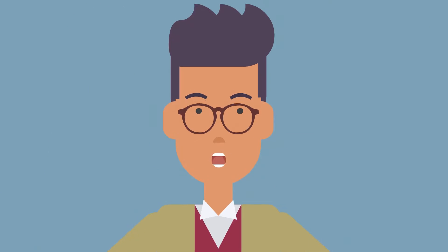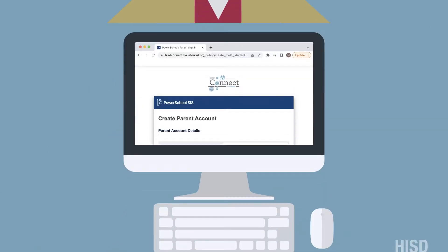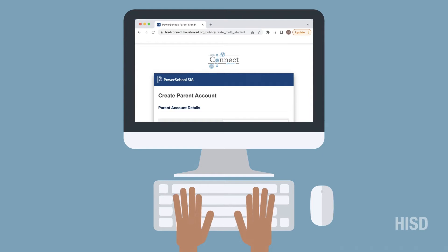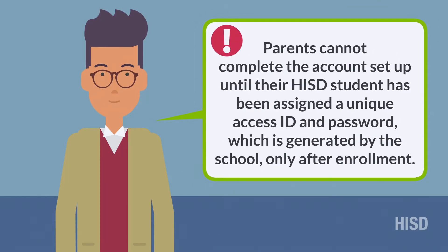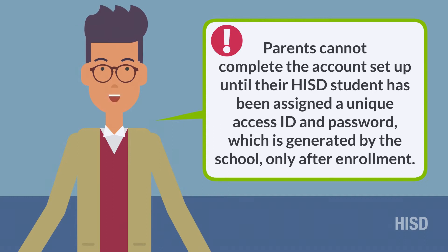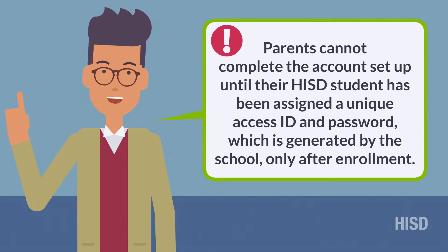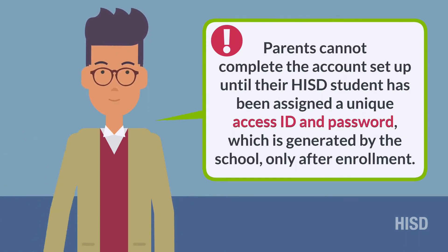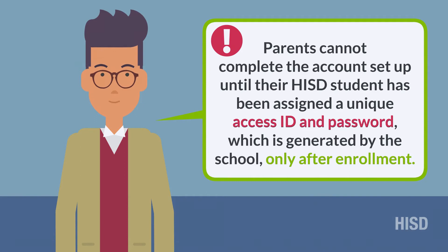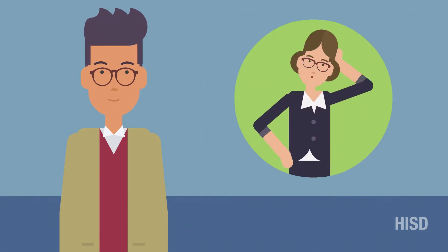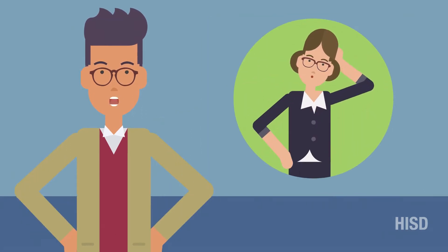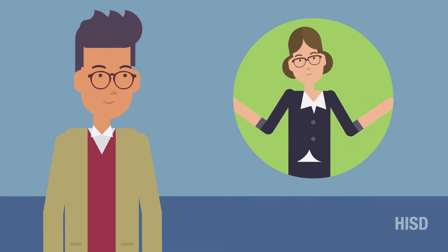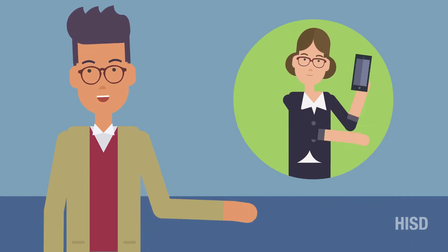In order to access this information online, parents must first create an HISD Connect account. It's important to know that parents cannot complete the account setup until their HISD student has been assigned a unique access ID and password, which is generated by the school only after enrollment. Parents that haven't received their student's access ID and password should contact their child's school at their earliest opportunity.